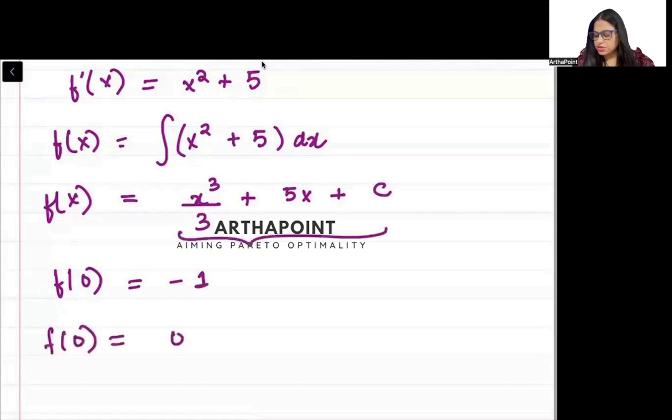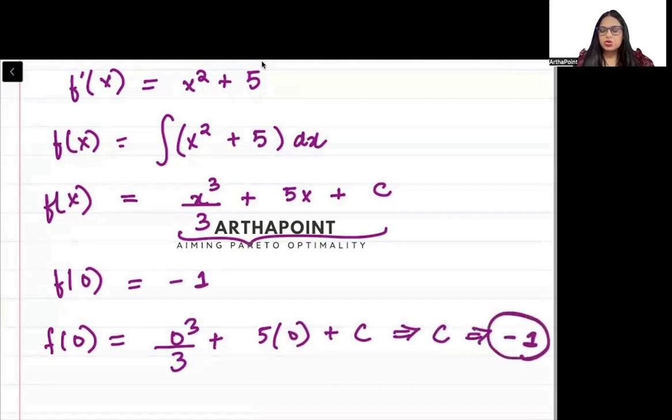So f(0) becomes 0³/3 plus 5 into 0 plus c. So f(0) becomes c which means c will be equal to -1.